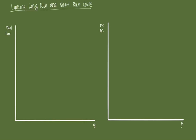In the short run we know that capital is fixed, but in the long run all inputs are variable so capital can change. Say in the short run at an initial level of capital we have a short-run cost function — call it SC — and this uses the amount of capital k-naught.